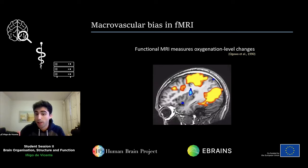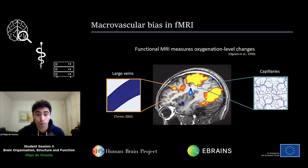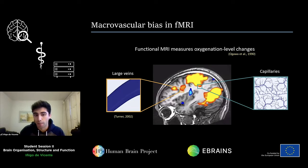However, it's important to understand that this is not always the case. It is true that oxygenation changes are mostly happening in capillaries, which are very small vessels that are indeed close to neurons. But it is also possible that what we see are coming from large veins, which are far away from the neuronal source. This is a problem because in the end, we are somehow interpreting noise as neuronal activity.